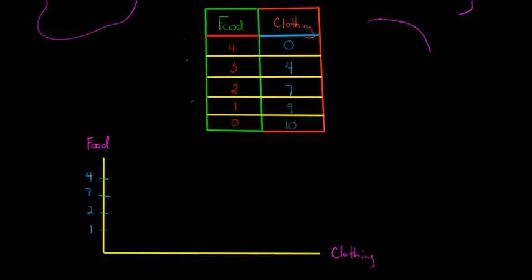Now we're going to map out clothing, and the clothing is going to go from zero to ten. That's why I've drawn a much longer line for the x-axis. So we mark one, two, three, four — I hope I left myself enough space there. So what we're going to do now is just plot the points. Four units of food corresponds to zero units of clothing.